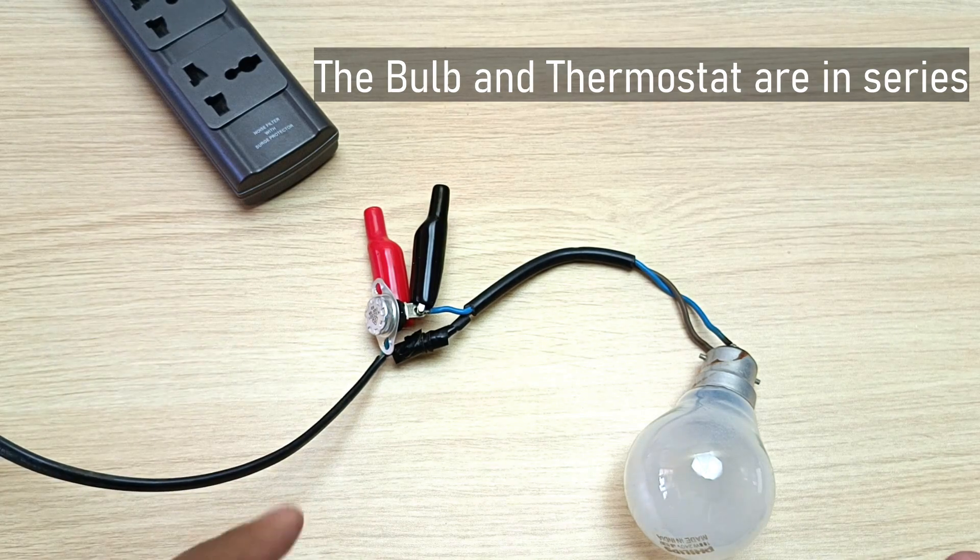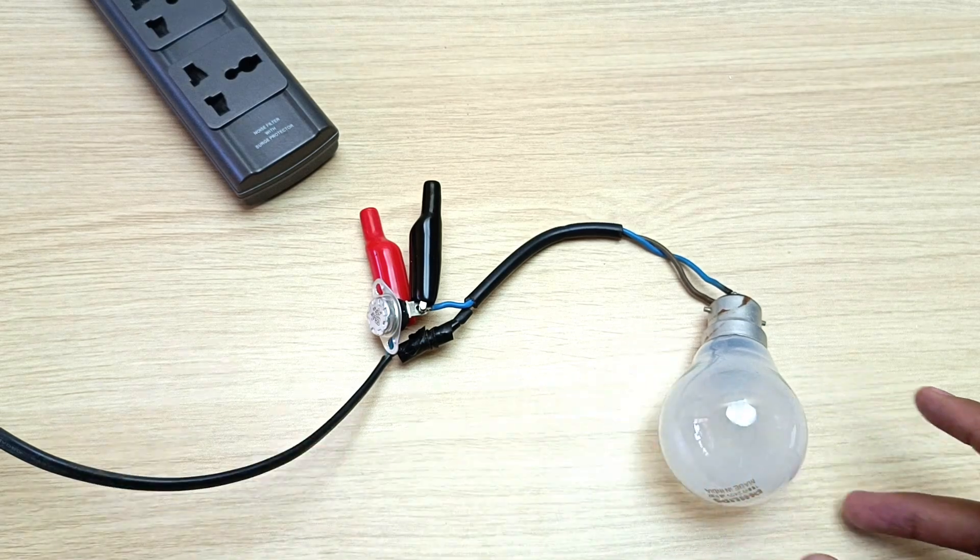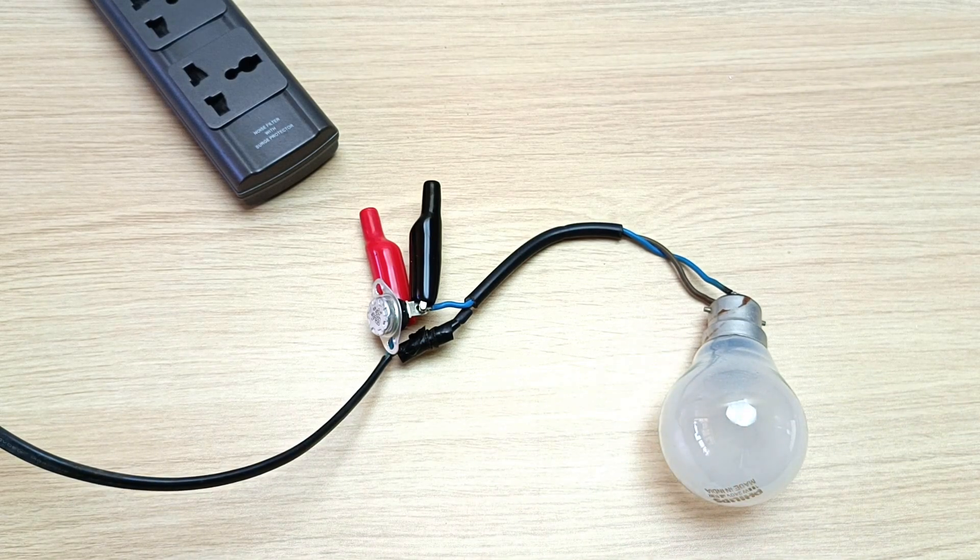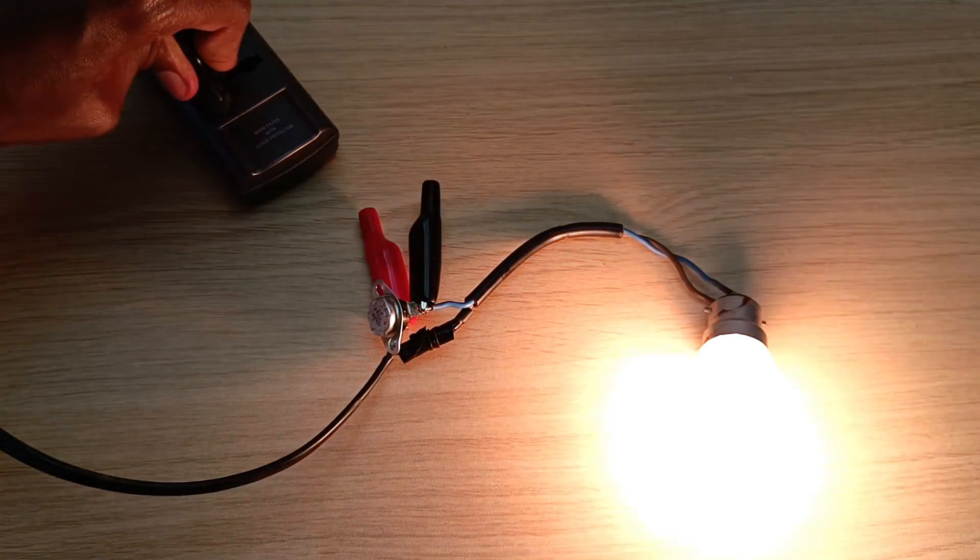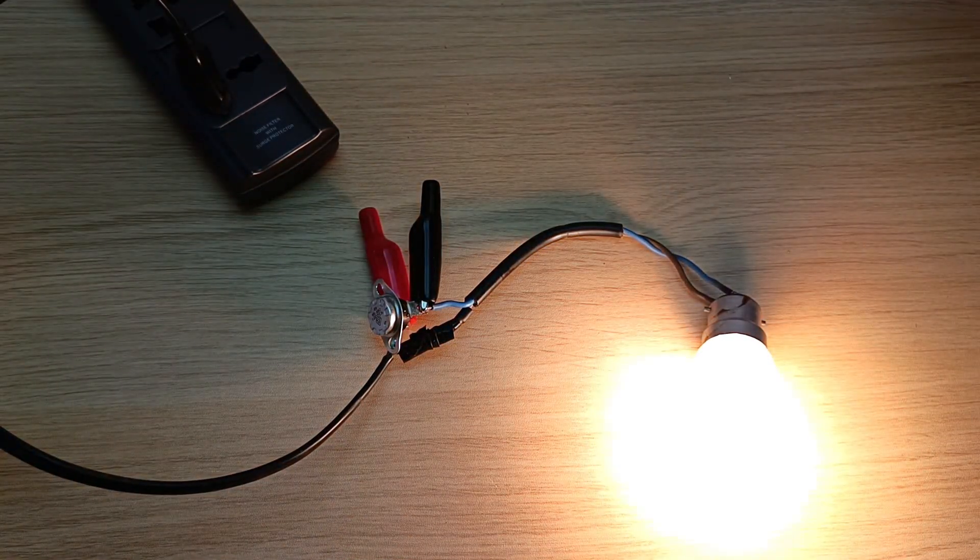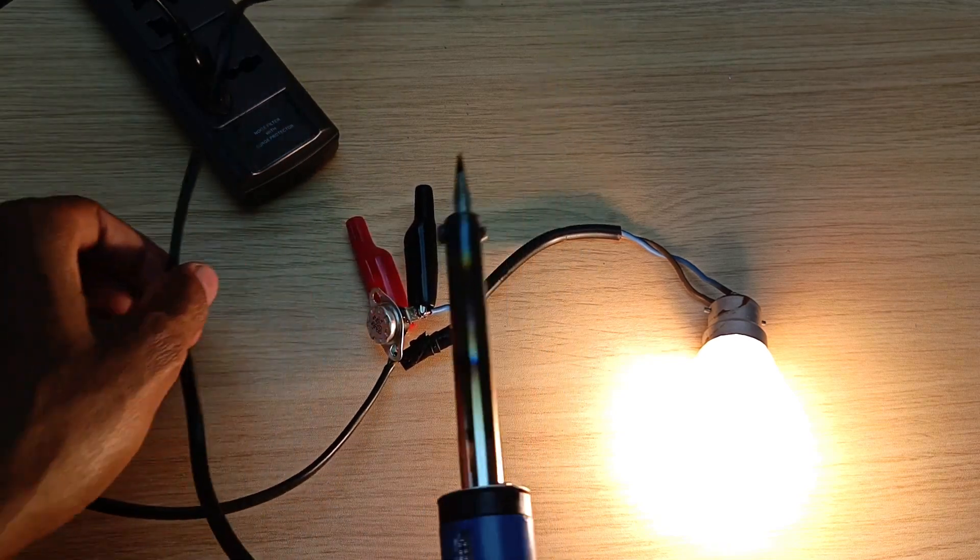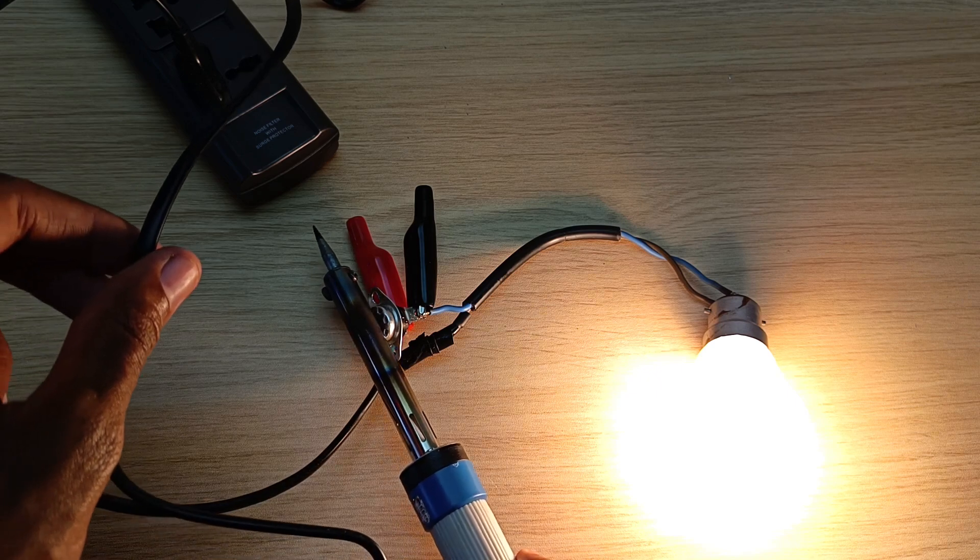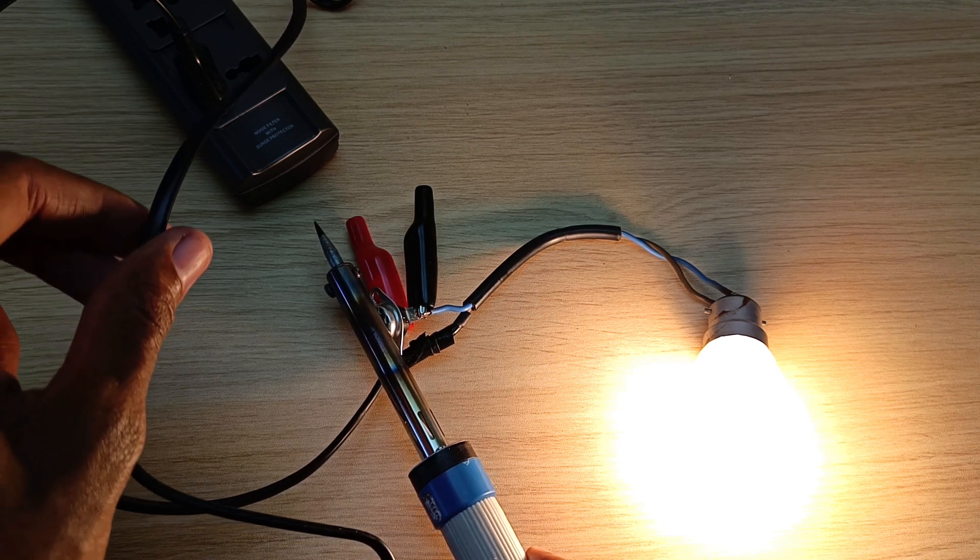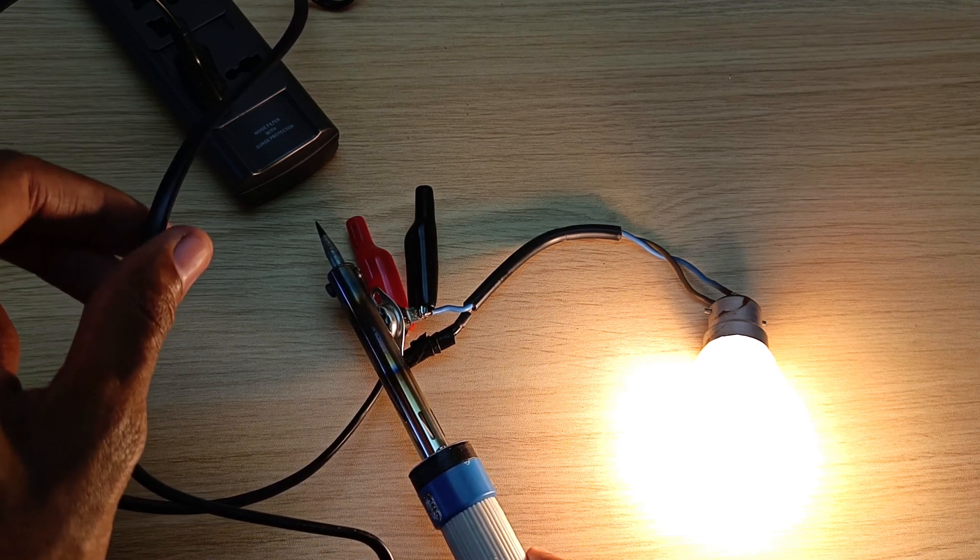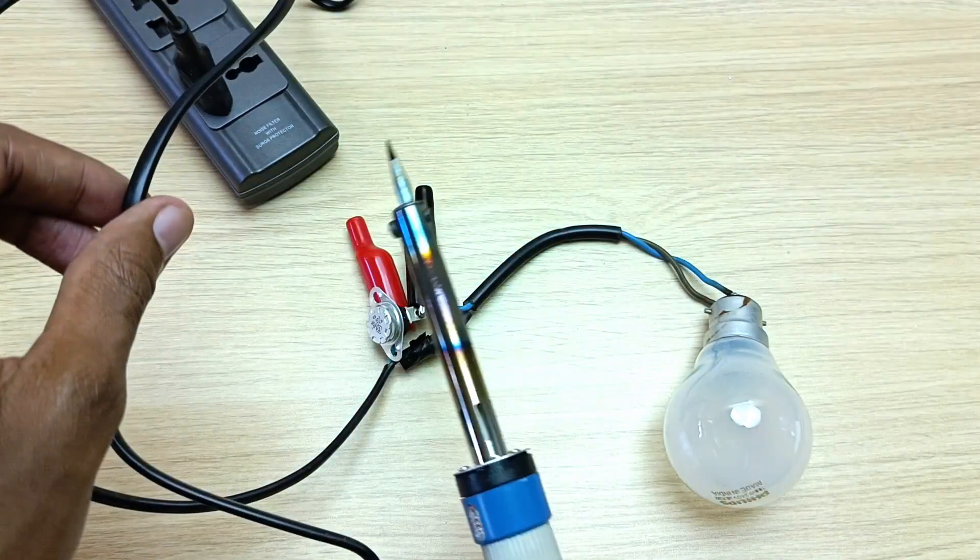I'll try this experiment again with this bulb, and this is in place of the heating element inside the water dispenser. And again, please don't try and do this at home. I'll just plug it in and this bulb should turn on. And if I bring heat to the thermostat, it should heat up to a point where this light bulb will just turn off. And there we go.